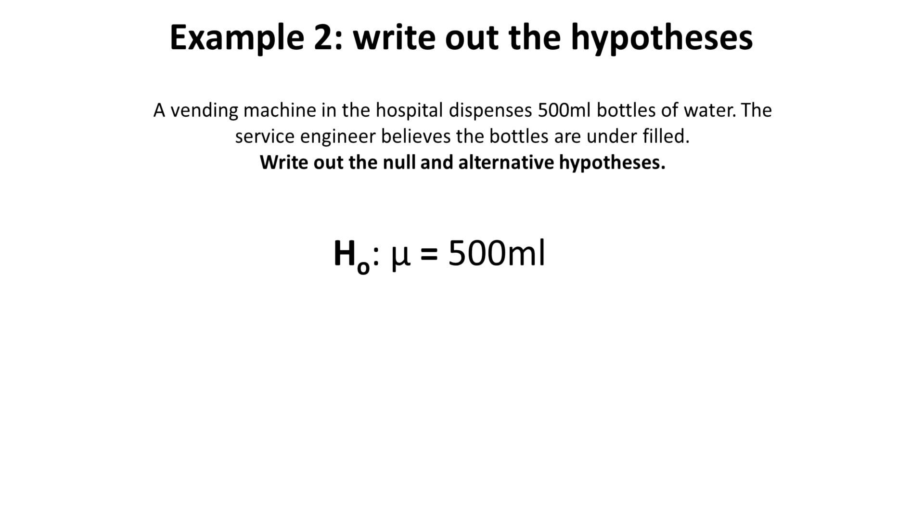In this example, the vending machine should dispense bottles of water we expect to contain 500 ml. So this defines the null hypothesis that mean mu for the amount of water in each bottle is equal to 500 ml. But the service engineer suspected that the amount in each bottle was actually less. So again, this defines the alternative hypothesis, the mean mu being less than 500 ml. The engineer then went on to collect data which could be used to test this hypothesis and to decide if the null or the alternative should be accepted.